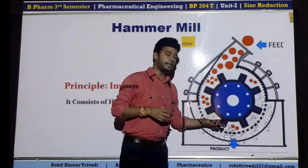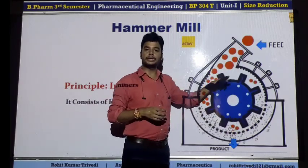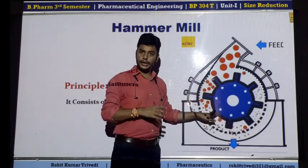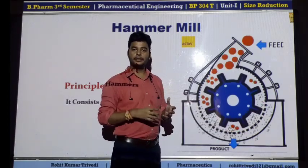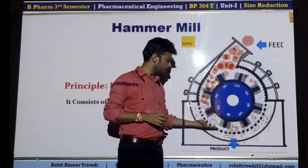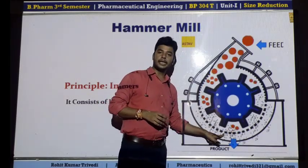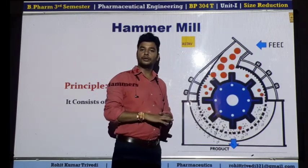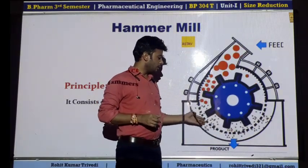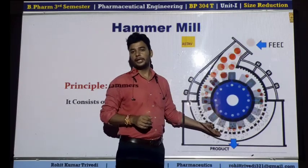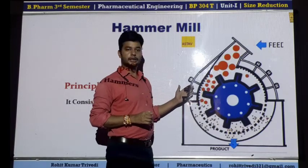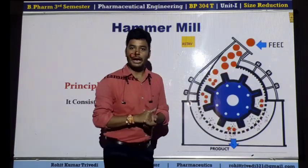The large size particles will keep on moving inside the hammer mill, and again the impact will happen. The particles will be reduced into small size, and the small size particles will be screened through this screen — ultimately we will collect all those small particles. We can adjust the size of this screen as per our requirement. So this is the basic working, basic structure, and the principle of hammer mill.